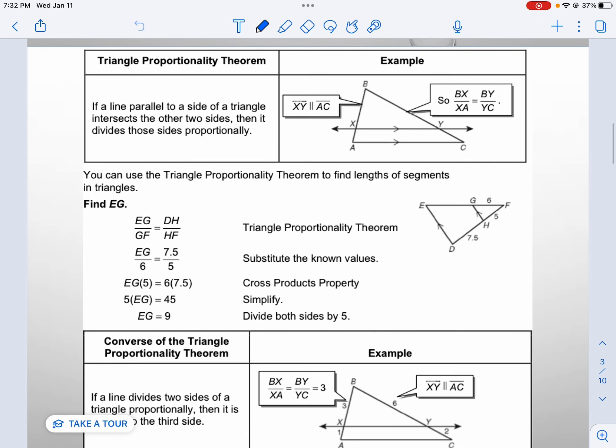The first theorem is the triangle proportionality theorem. If a line parallel to a side, so if we look here, we have line XY parallel to segment AC, then it divides those two sides proportionally. Meaning that BX would be proportional to XA, and BY would be proportional to YC, and those two ratios would be proportional.